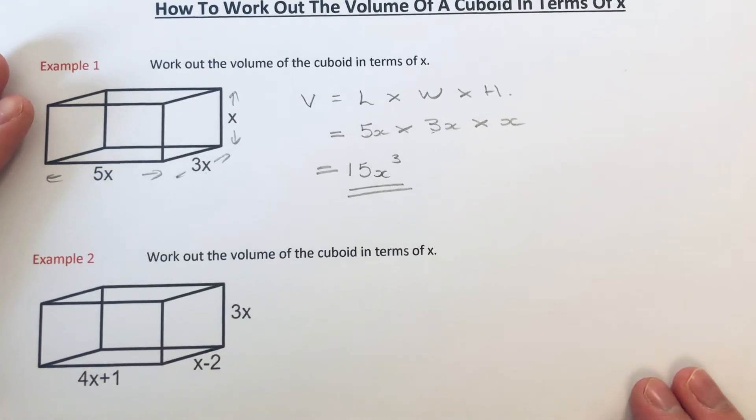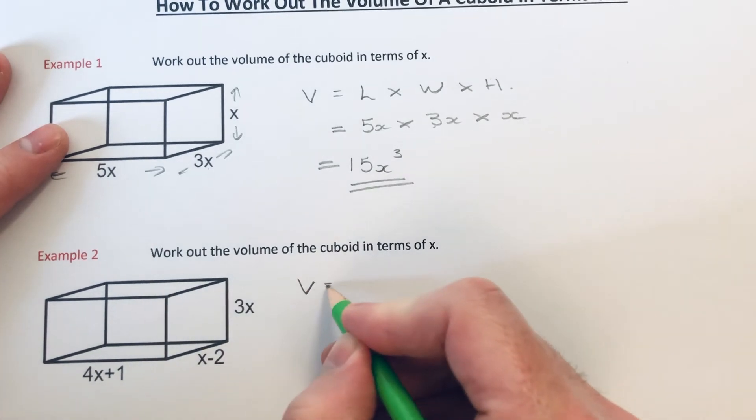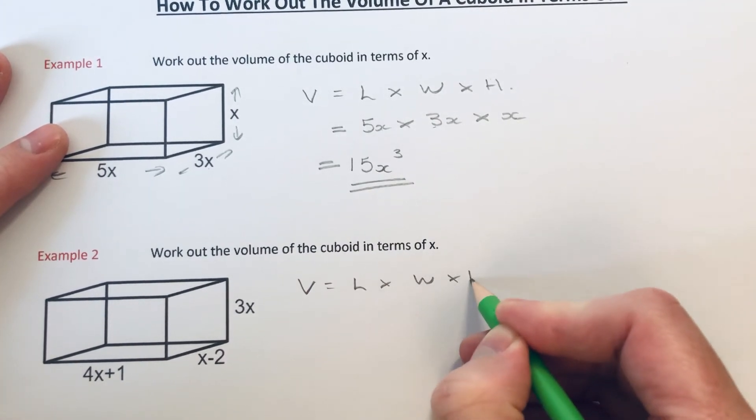Let's move on to example 2. We've got to work out the volume of the cuboid in terms of x. Again, to find the volume, we do length times width times height.